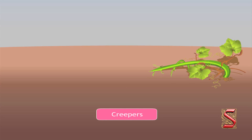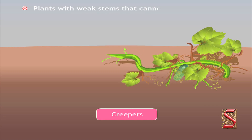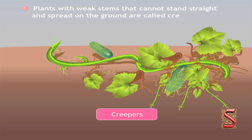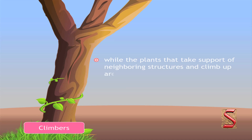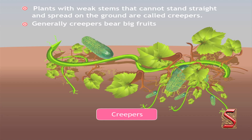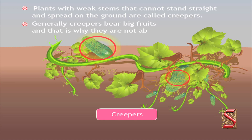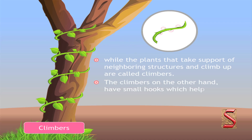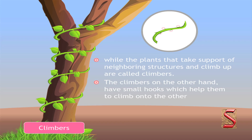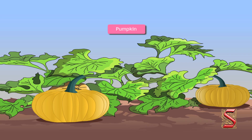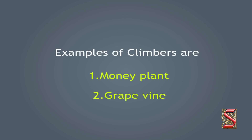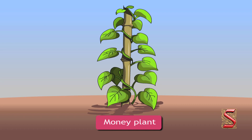Now look at some other types of plants also. Plants with weak stems that cannot stand straight and spread on the ground are called creepers. Plants that take support of neighboring structures and climb up are called climbers. Generally creepers bear big fruits and that is why they are not able to climb up. The climbers have small hooks which help them to climb onto other plants. Examples of creepers are pumpkin and watermelon. Examples of climbers are money plant and grapevine.